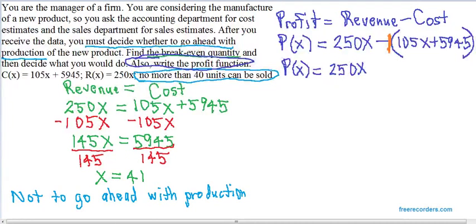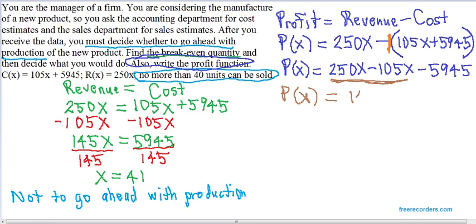Negative 1 times positive 105x is negative 105x. And negative 1 times positive 5945 is negative 5945. Finally, take these two like terms and combine them. 250x minus 105x is 145x. And then you still have this term, which has no like term to combine with it. So there's your profit function, p of x equals 145x minus 5945. And we've now done all three things the directions asked us to.